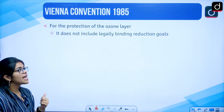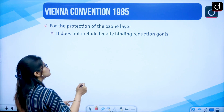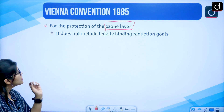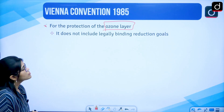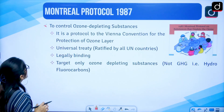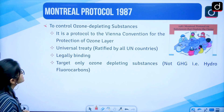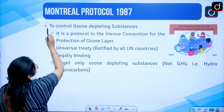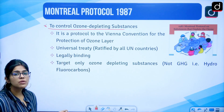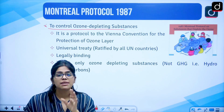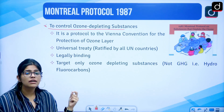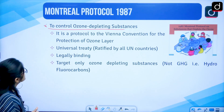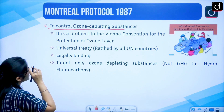Then we have the Vienna Convention 1985, enacted for the protection of the ozone layer. It does not include legally binding regulation goals. Then came the Montreal Protocol 1987, which is again important for the protection of the ozone layer — it is to control ozone depleting substances. The Montreal Protocol is an addition to the Vienna Convention; it is a protocol to the Vienna Convention for the protection of the ozone layer.